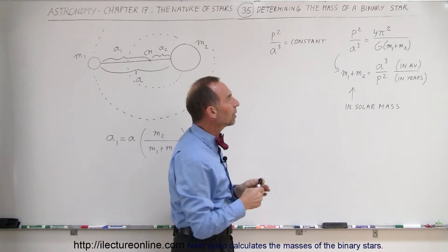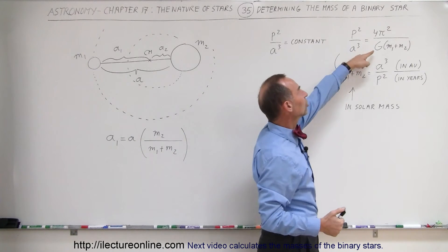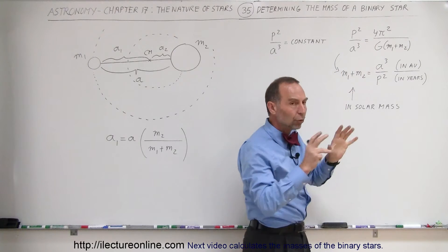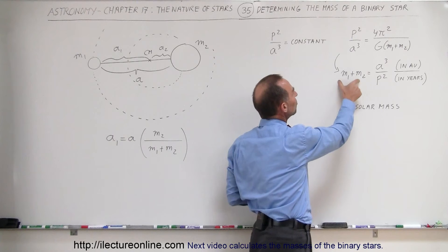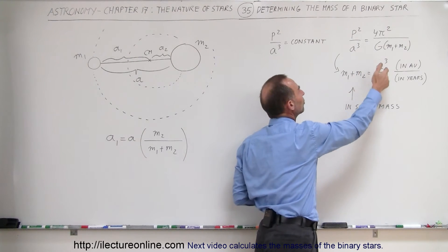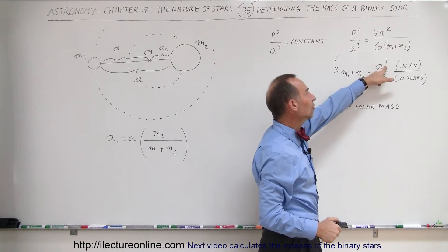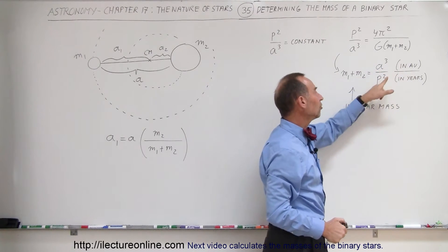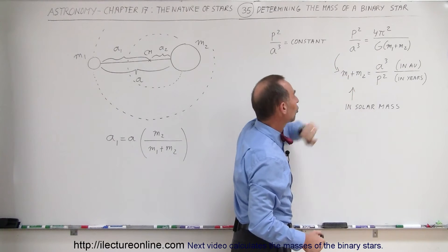When Newton came along, he actually took the laws of gravity and included the additional constant, the gravitational constant G. Doing some mathematics, he was able to prove that the sum of the two masses is equal to A cubed divided by P squared. And as long as we express the distance between the stars in astronomical units and the period in years, then the answer will come out in solar masses.